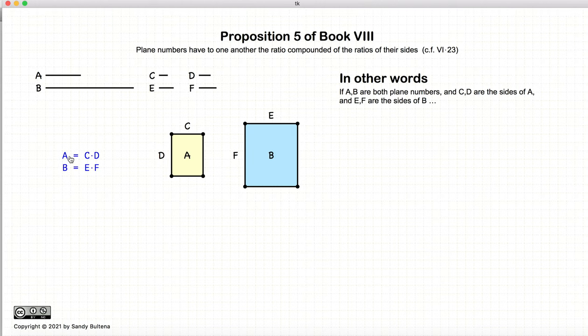Now, in this proposition, we have two plane numbers A and B, which are created by multiplying C and D and E and F, respectively. So, A and B are plane numbers, CD are the sides of A, and EF are the sides of B. So, if we draw this as a rectangle, we end up with something that looks like this as a visual representation.